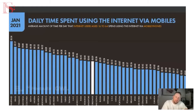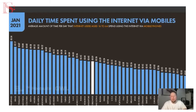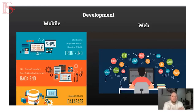On mobile usage: time spent daily using the internet via mobile phones is on average three hours forty a day. In the UK it's a bit lower at two hours forty-four. It goes as high as almost six hours in the Philippines, where people probably don't have desktops and laptops as much and are using mobiles quite a lot.